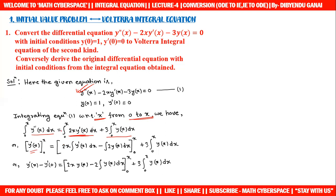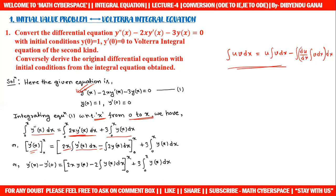We use the UV integration by parts formula: ∫u·v dx = u·∫v dx − ∫(du/dx·∫v dx) dx. Applying this to ∫₀ˣ 2x·y'(x) dx: this becomes 2x·y(x) − 2·∫y(x) dx, evaluated from 0 to x. Adding the remaining term gives: [y'(x)]₀ˣ = 2x·y(x) − 2∫₀ˣ y(x) dx + 3∫₀ˣ y(x) dx.